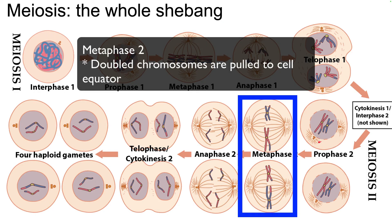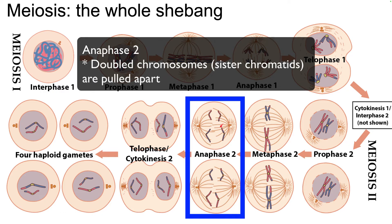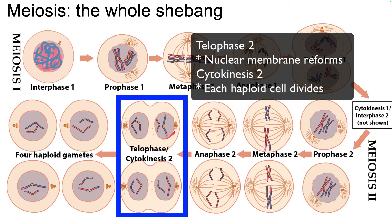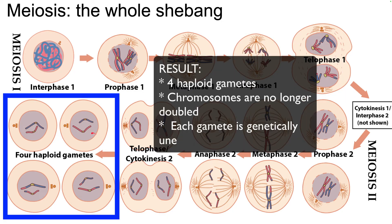During meiosis two, during metaphase, the doubled chromosomes get pulled to the cell equator, and then they get pulled apart during anaphase two. Then there's a telophase where a new nuclear membrane forms, and then there's another cytokinesis.